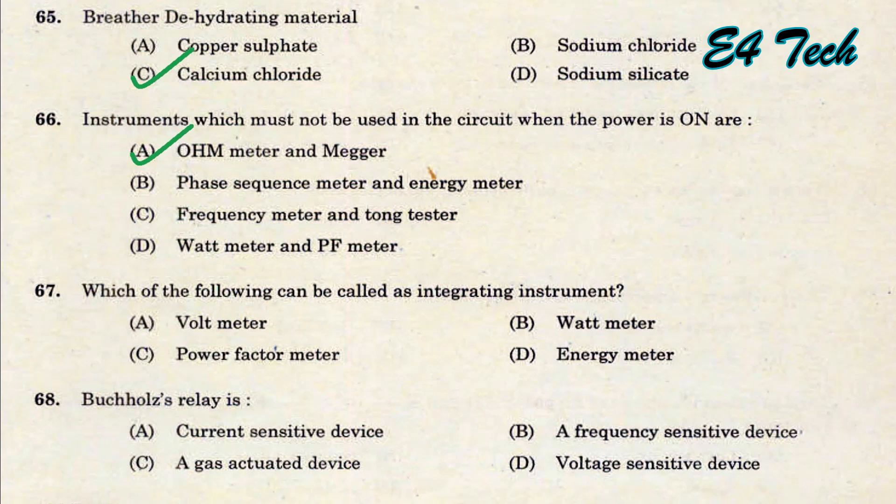Which of the following can be called an integrating instrument? An integrating instrument performs summation. It is an energy meter or watt-hour meter. That is option D.